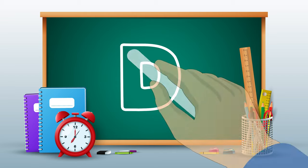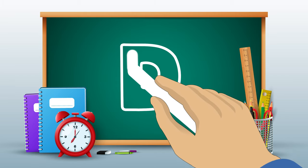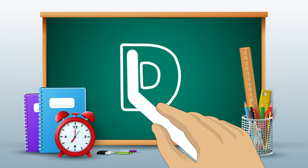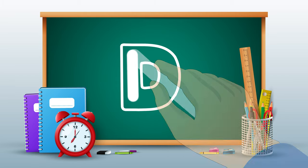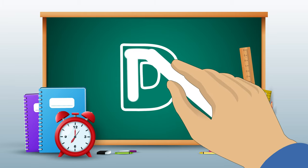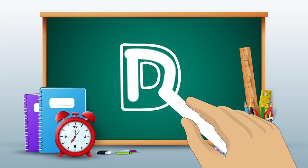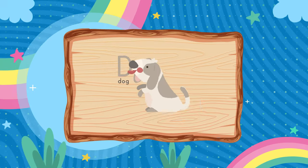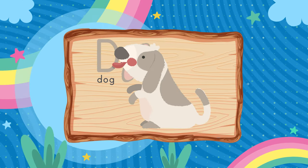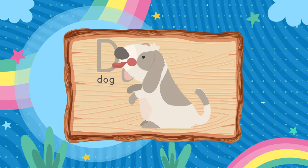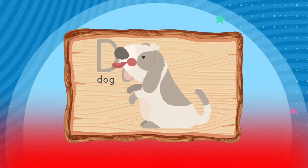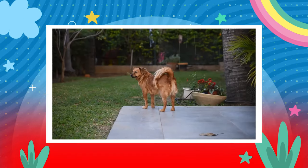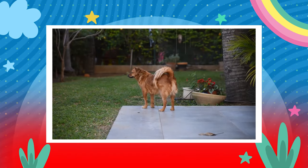Let's write the next letter D. Pull down. Go back to the top and around. D is for Dog. Dog.